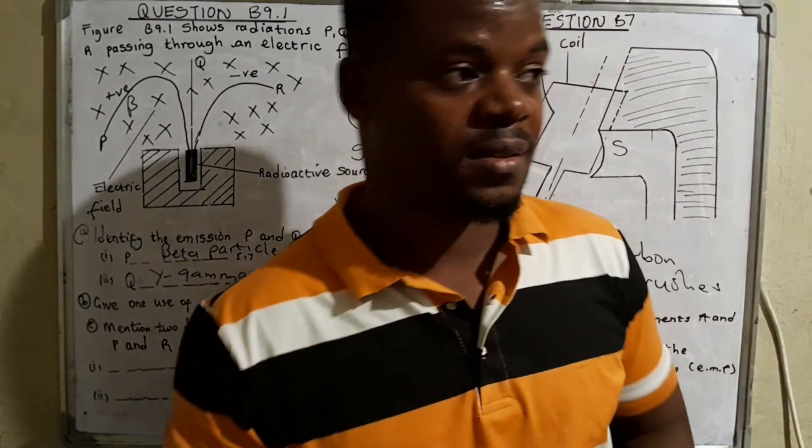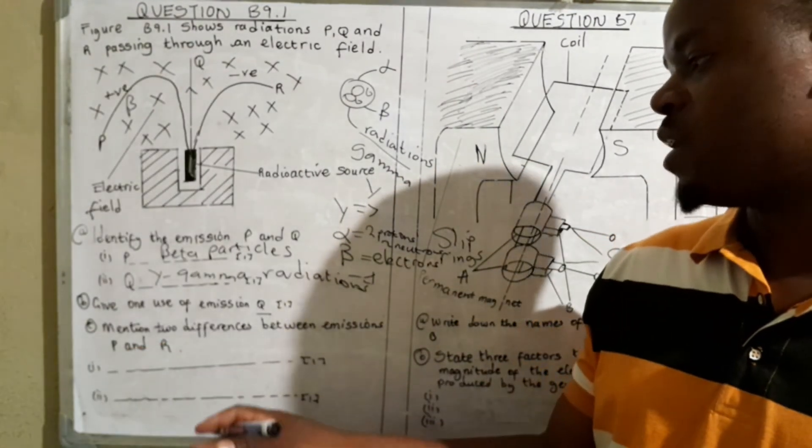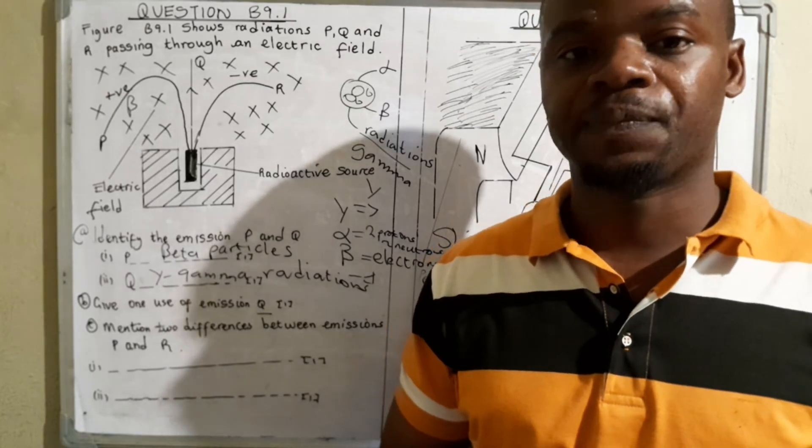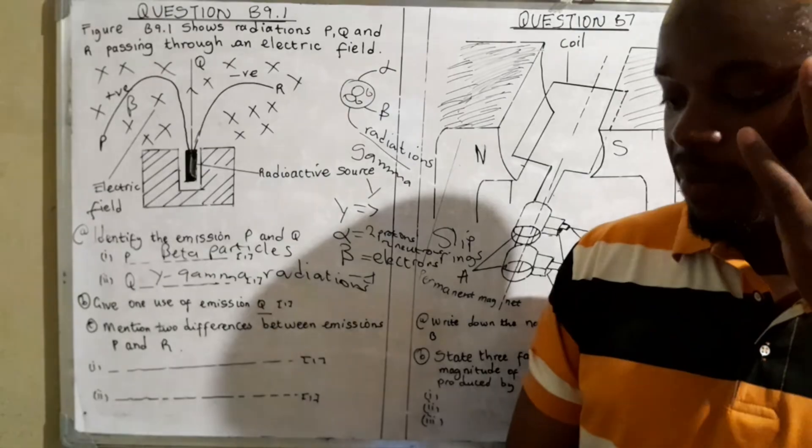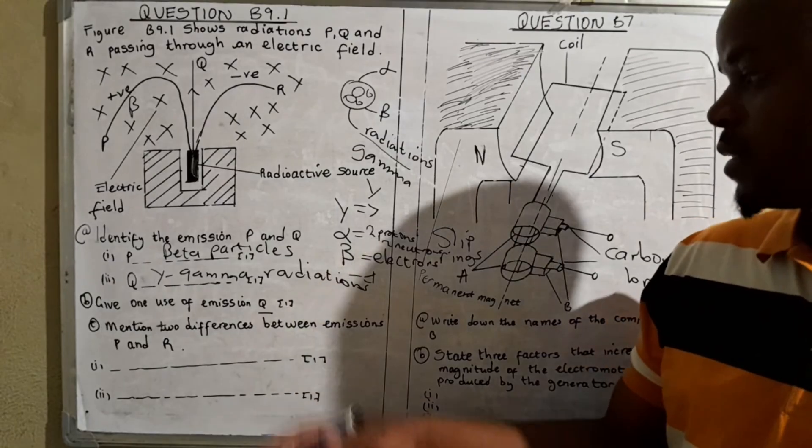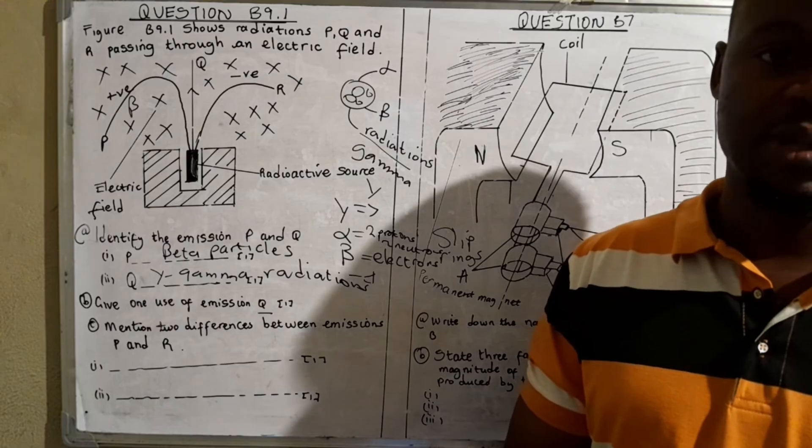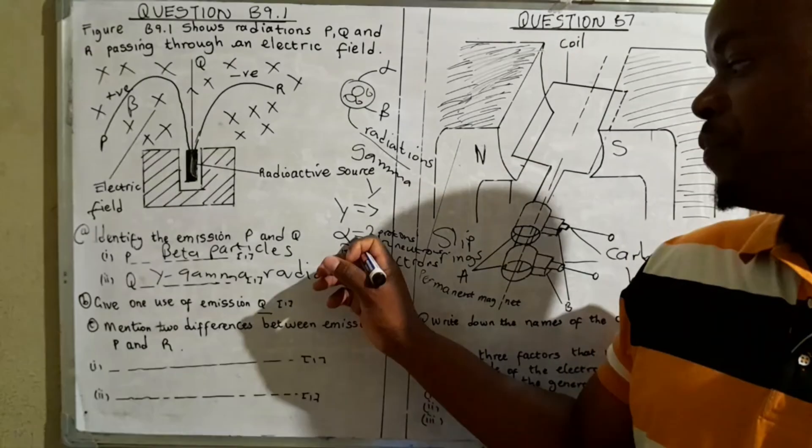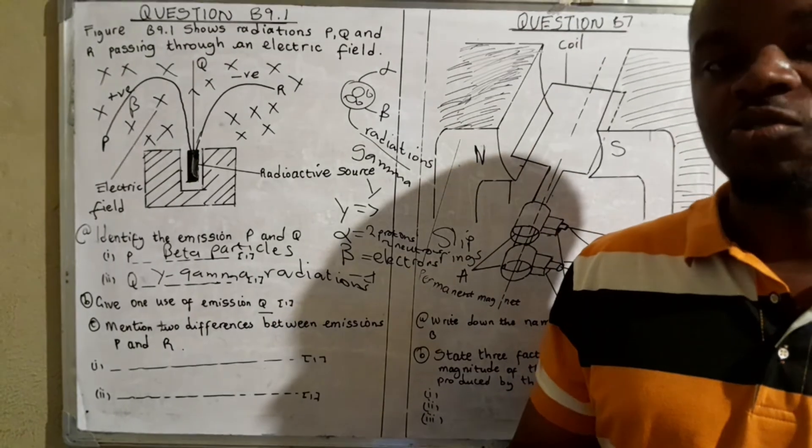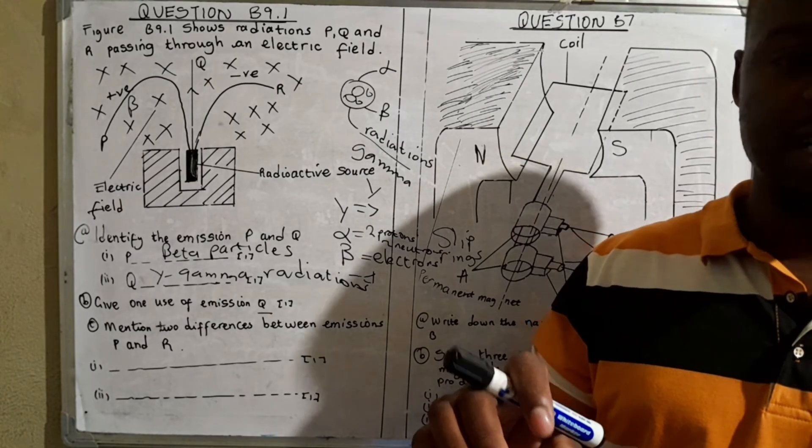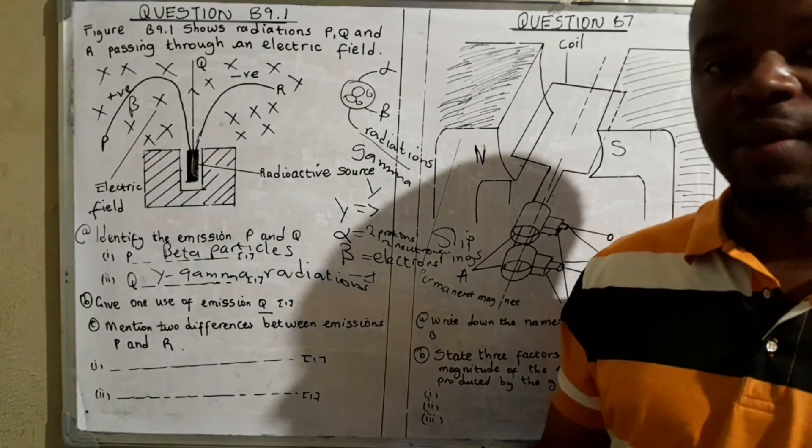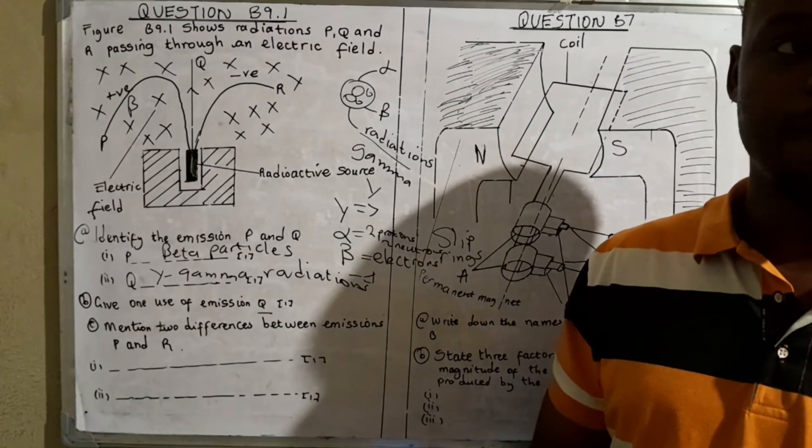Mention two differences between emissions P and R. They're asking you to contrast beta and alpha particles. Beta particles are negatively charged while alpha particles are positively charged. We can also contrast them in terms of mass. Alpha particles consist of two protons and two neutrons, meaning they have a large mass compared to beta particles which consist of one electron.